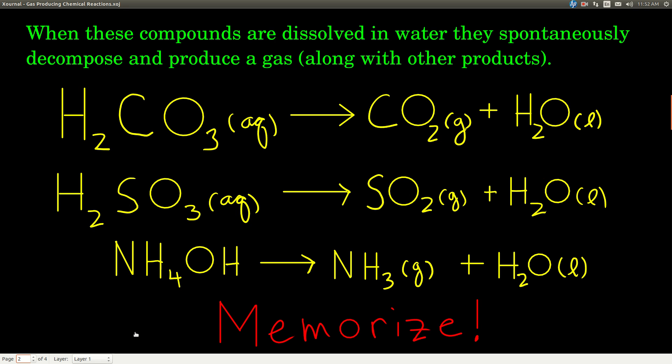So first thing is, here they are, and this you just have to memorize. This is not something that you're going to figure out from stuff we've talked about so far. You just have to remember that when you're doing a double replacement reaction, you're doing it on paper and you're figuring out what the products would be.